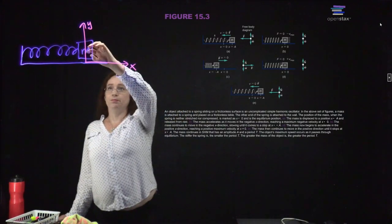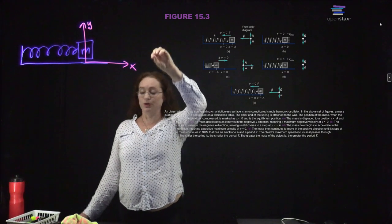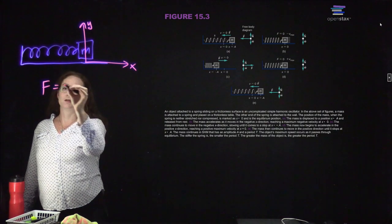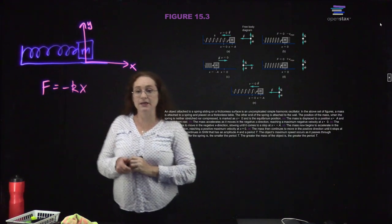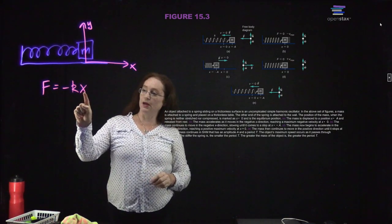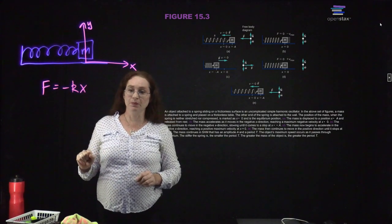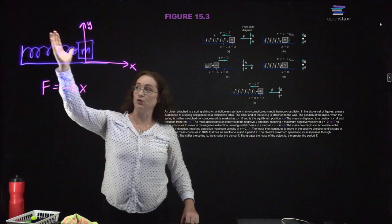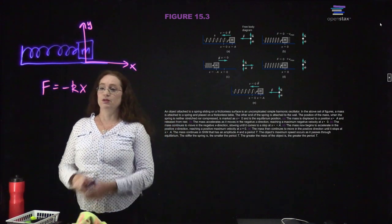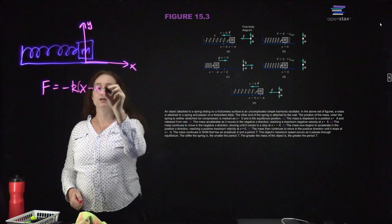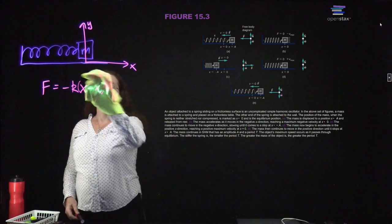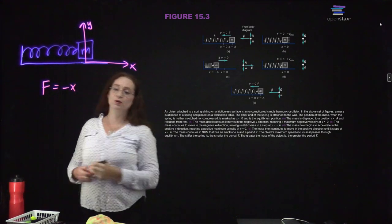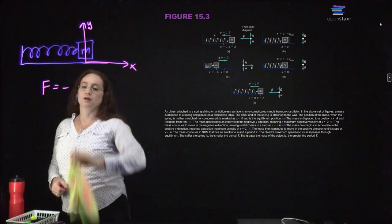We pull the mass slightly away from the equilibrium position, and the force experienced is negative kx, where k is called the spring constant, and x is the displacement from the equilibrium position. If I had defined my origin slightly off from the equilibrium position, this would potentially have an offset. To keep the math simple, we define the origin as the equilibrium position, so we don't have to have those correction terms.